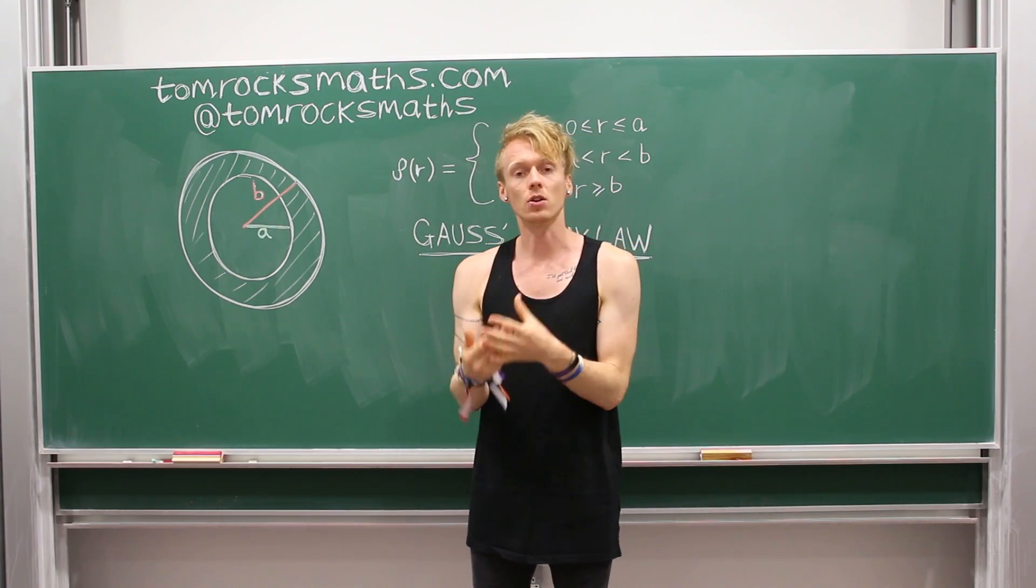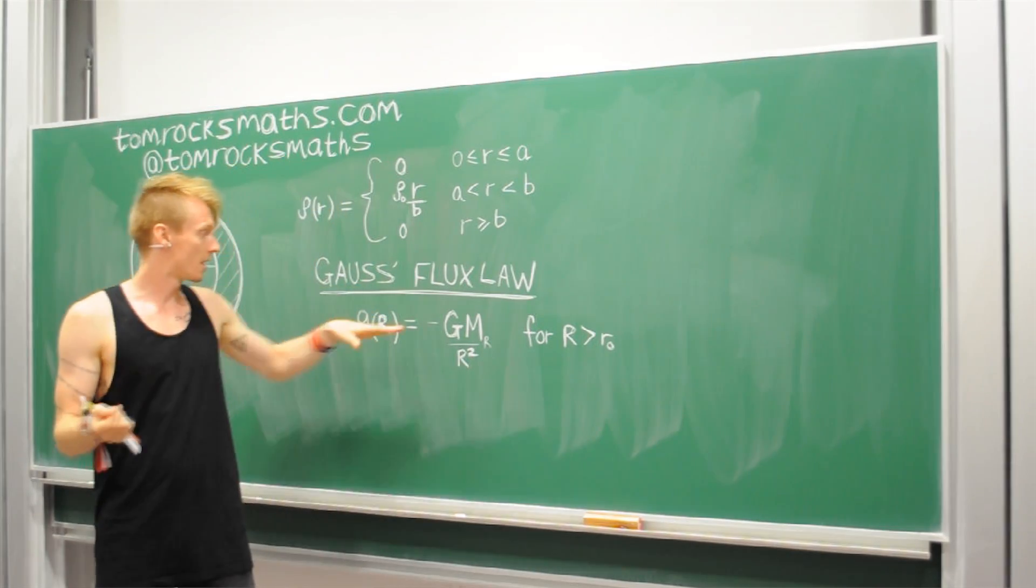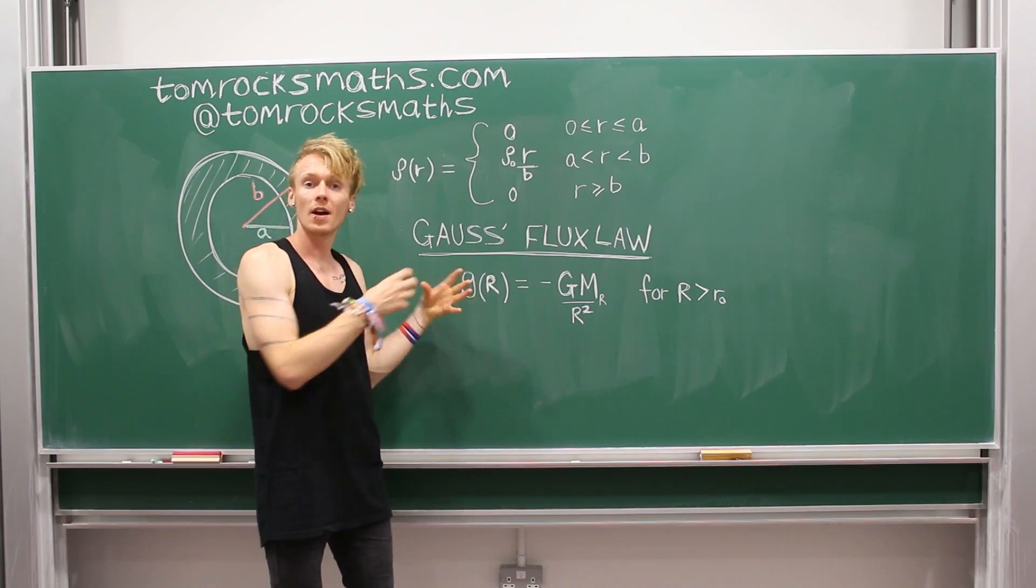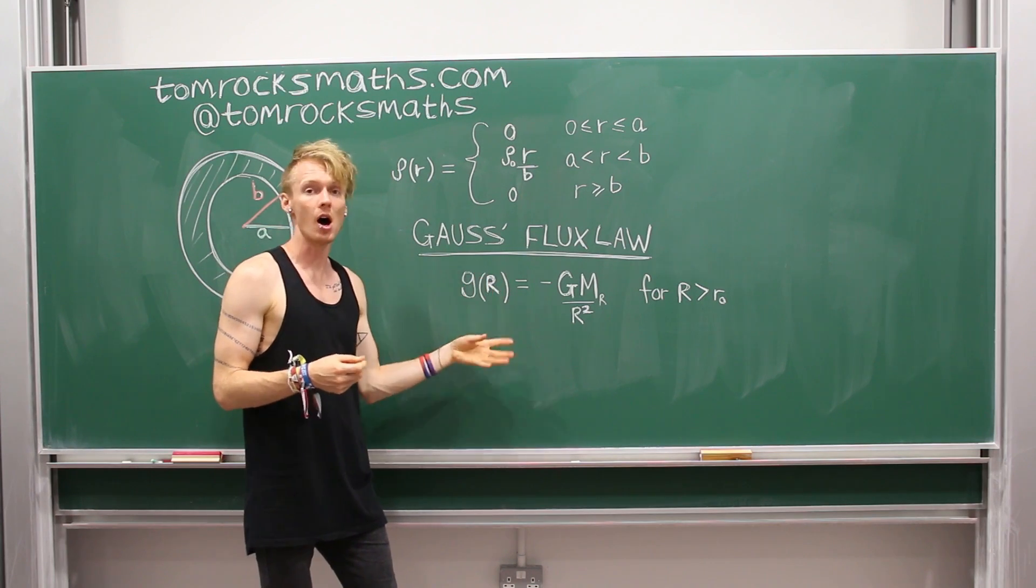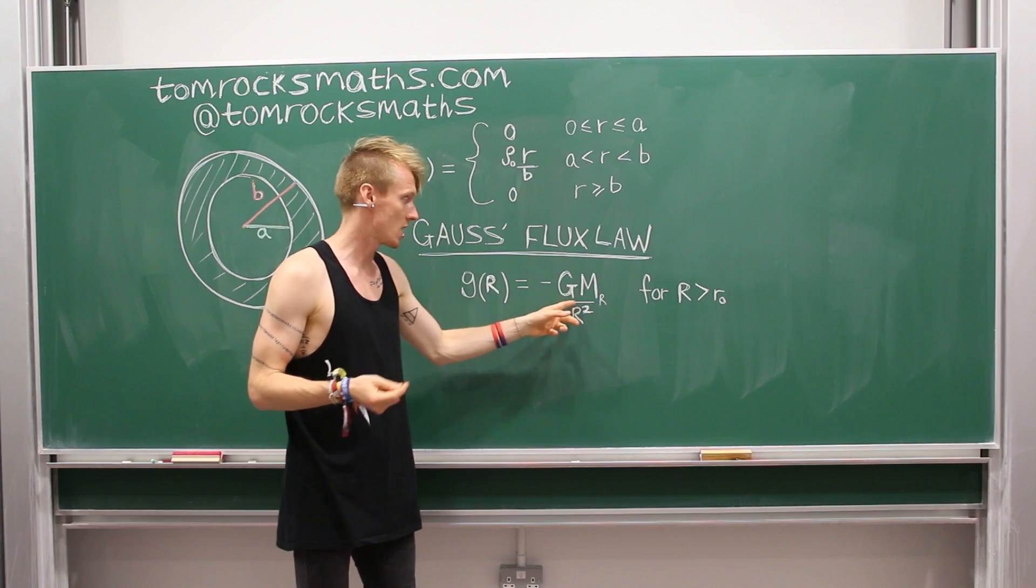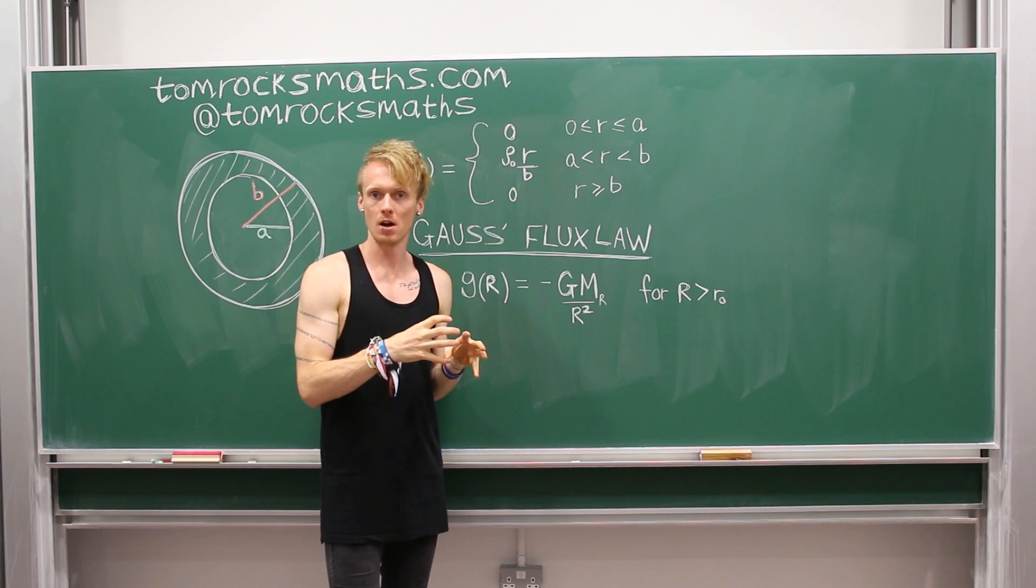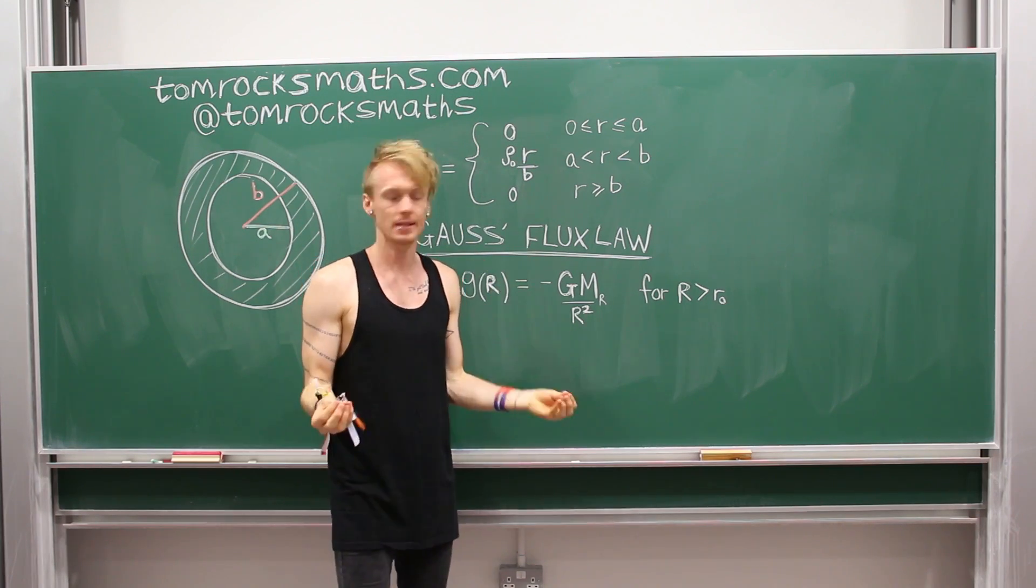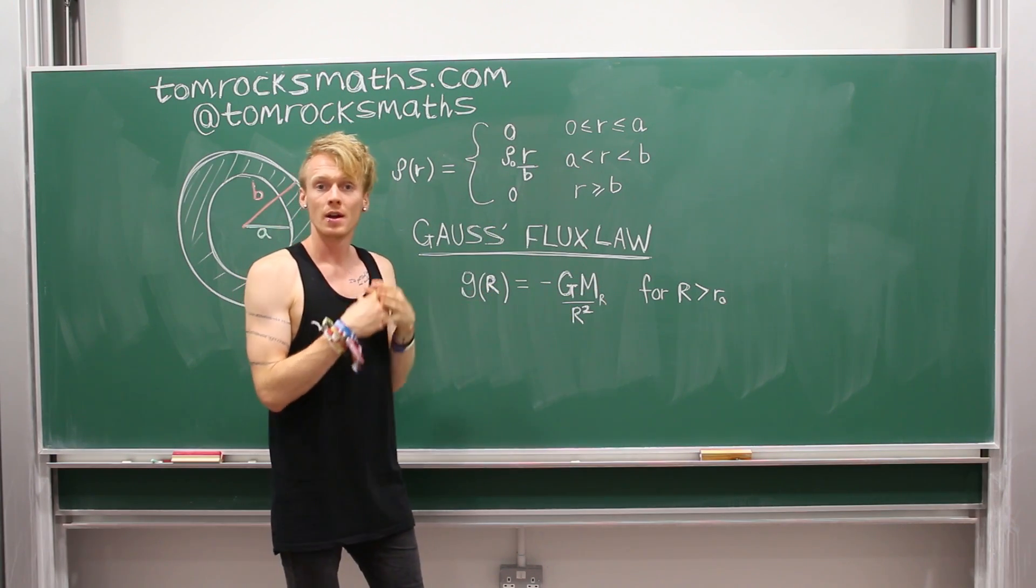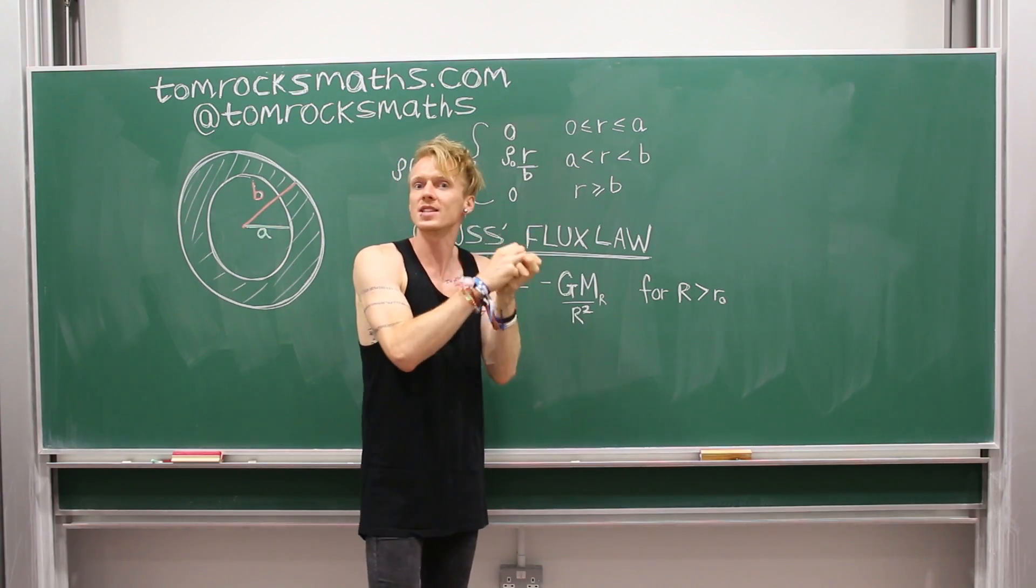And so that means it has spherical symmetry. Under these assumptions, Gauss's flux law just becomes this very nice, simple expression. And this says that your gravitational field at a distance capital R is just equal to minus the universal gravitational constant G times the mass inside the radius capital R, which we will need to calculate, divided by the radius squared. And this is true for all distances from the centre R, provided that you are not actually on the centre itself.